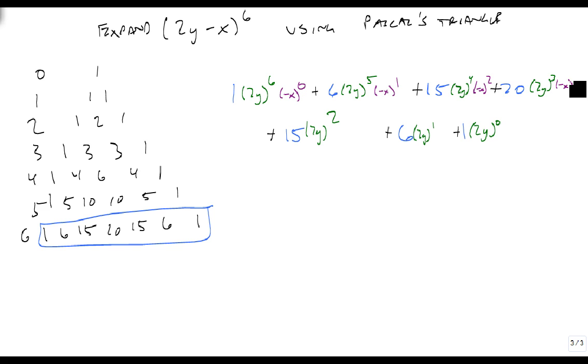And then my minus x will be to the first, second, third, fourth, fifth, and sixth power. So again, 6 plus 0, 5 plus 1, 4, 2, 3, 3, 2, 4, 1, 5, 0, 6 works out. We have 1, 2, 3, 4, 5, 6, 7 terms.